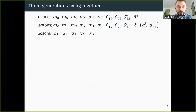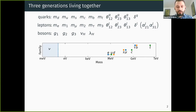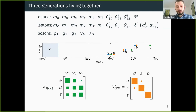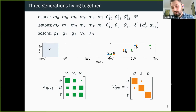Moreover, since different generations are so similar in other ways one might assume their masses should be of the same order, but this is not the case — within each generation the masses are vastly different, and neutrino masses are many orders of magnitude smaller than any other masses. Also, looking at the mixing matrices, they are quite far from generic. This is especially obvious for quarks: the CKM mixing matrix is very close to a diagonal matrix, despite the fact that generically it could be anything.